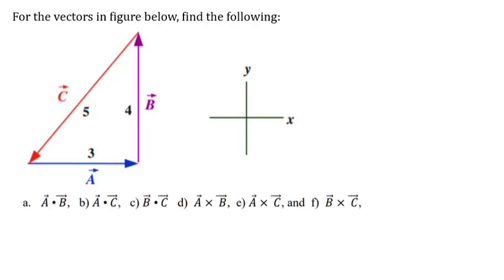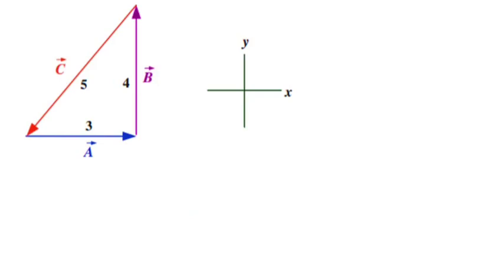Hi guys, so I have this question on vectors which reads: for the vectors in the figure below, find the following — the dot products as well as the cross product. Before we go into finding those, let's first figure out the three vectors being talked about. We have vector A, vector B, and vector C. We are guided to say that A is in the x-axis and B is in the y-axis.